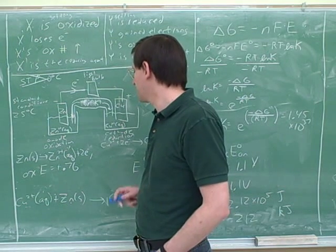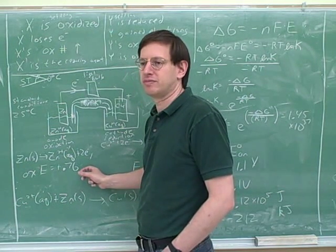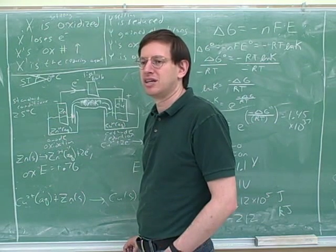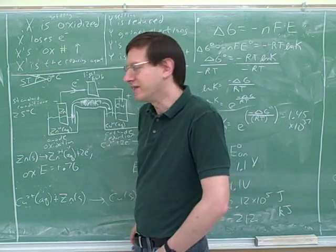So over time, what's going to be happening to the cell potential here? Yeah, it's going to go down. And what's going to happen to the delta G? It's going to go up—at least it's going to move to the right on the number line.